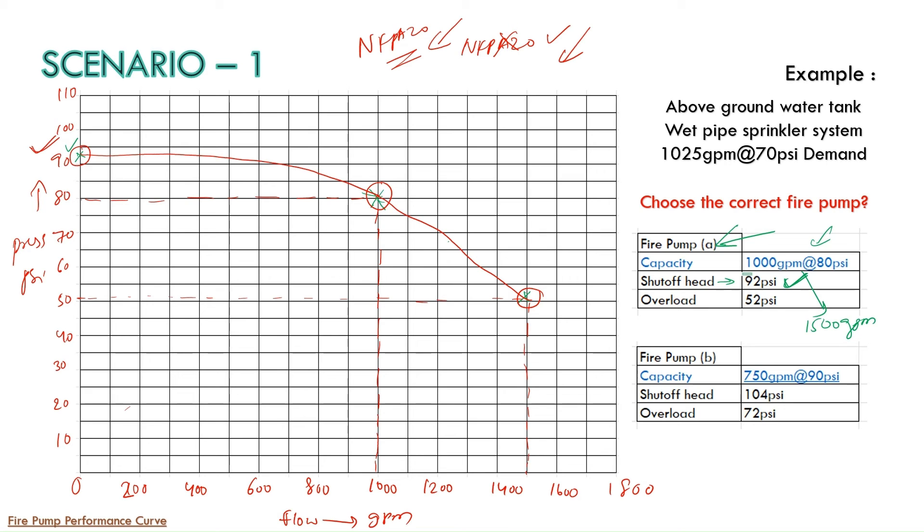So on y-axis at zero flow we consider the 92 PSI. Now we need to check our requirement. So here we have the system demand as 1025 at 70 PSI. So just we will try to locate this point on the graph. So now just we need to take the system demand and mark on the performance curve. So if you see 1025 GPM will be somewhere here and 70 PSI is here. So just I will mark this particular point in our drawing. So we can mark the intersection point. So 1025 GPM here we have and it will go till 70 PSI. So it will be somewhere here. So this is the most important and critical point you need to know.